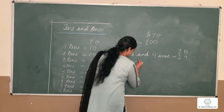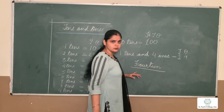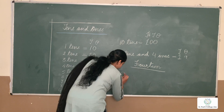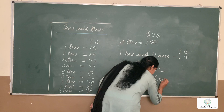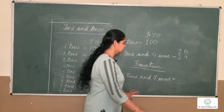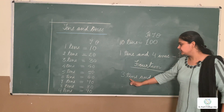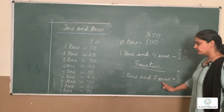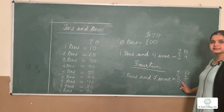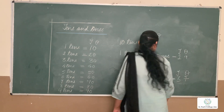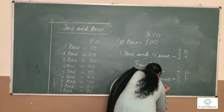What is the spelling of 14? F-O-U-R-T-E-E-N. Let's take another example. Suppose we have 3 tens and 7 ones. What will this be? We will write T and O. So we have 3 tens — 3 tens is 3. 7 ones — so below O we will write 7. So what is this number? 3 7 — 37.